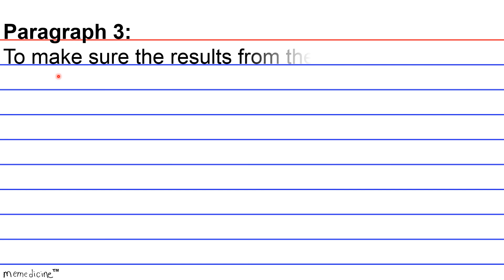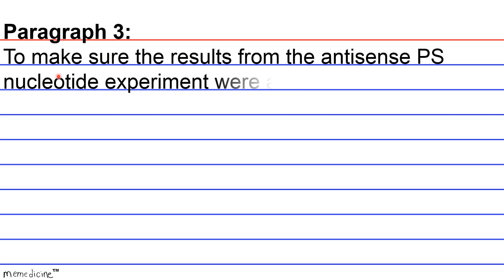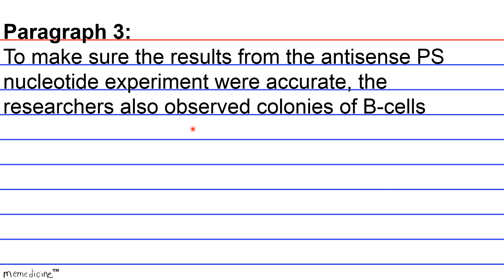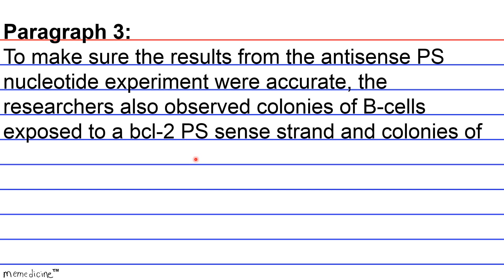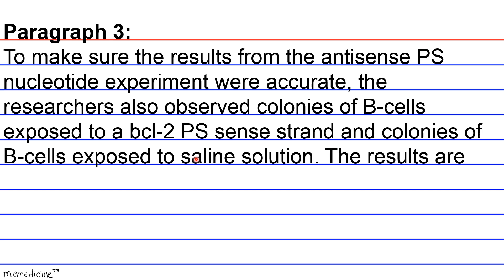Paragraph 3. To make sure the results from the antisense PS nucleotide experiment were accurate, the researchers also observed colonies of B-cells exposed to a BCL-2 PS sense strand and colonies of B-cells exposed to saline solution. The results are shown in Figure 2.